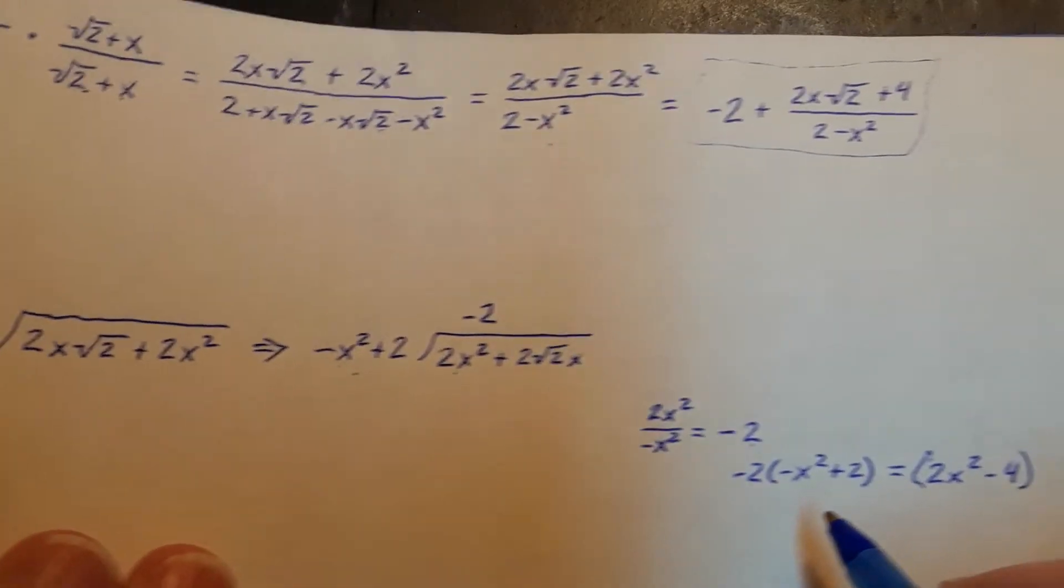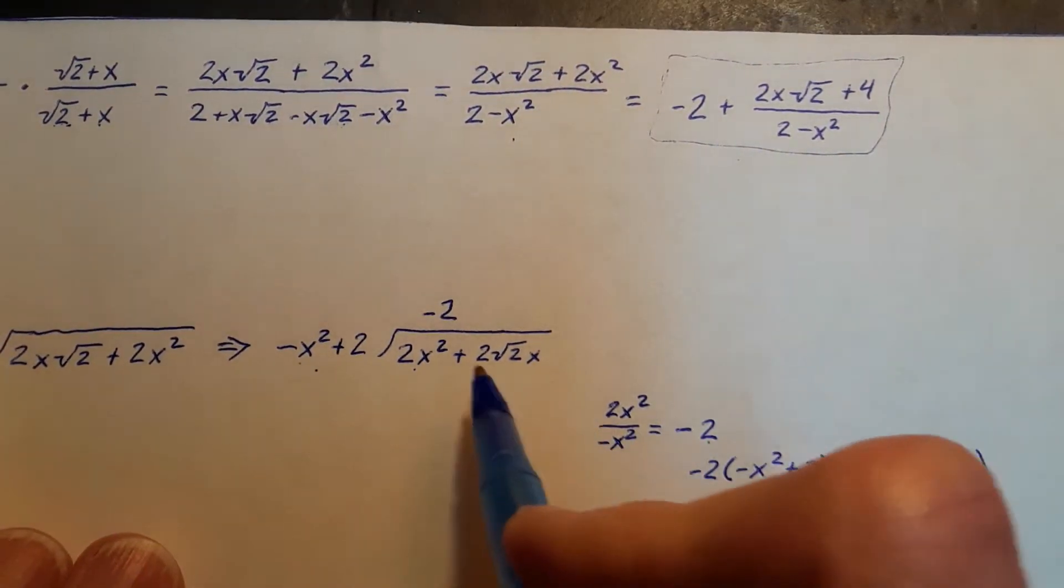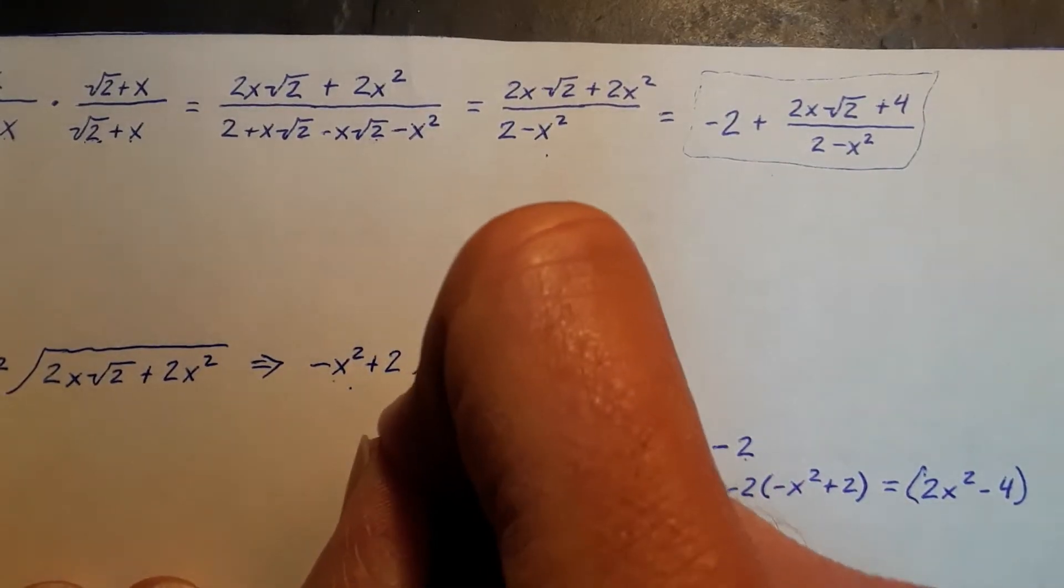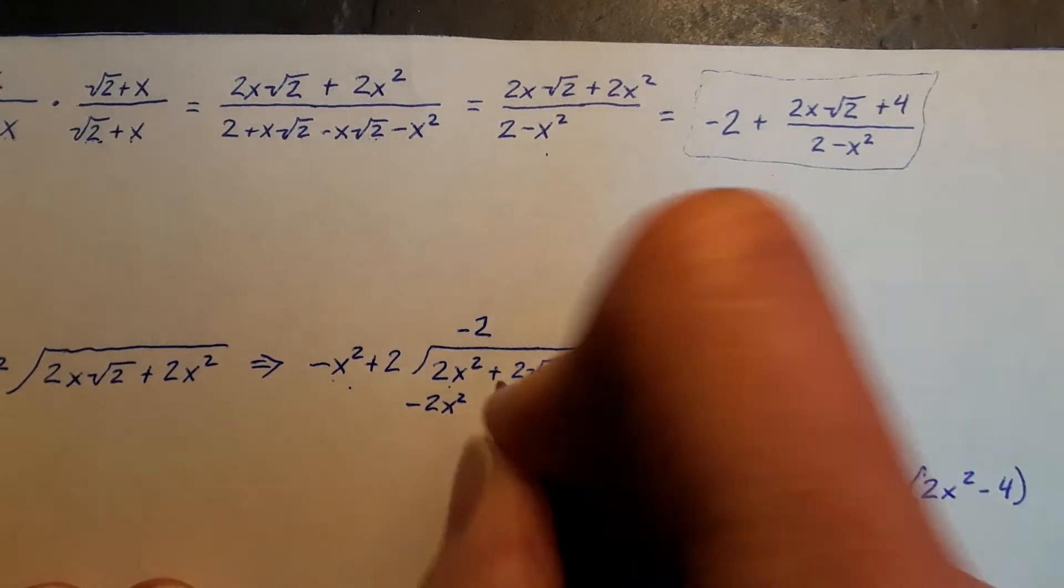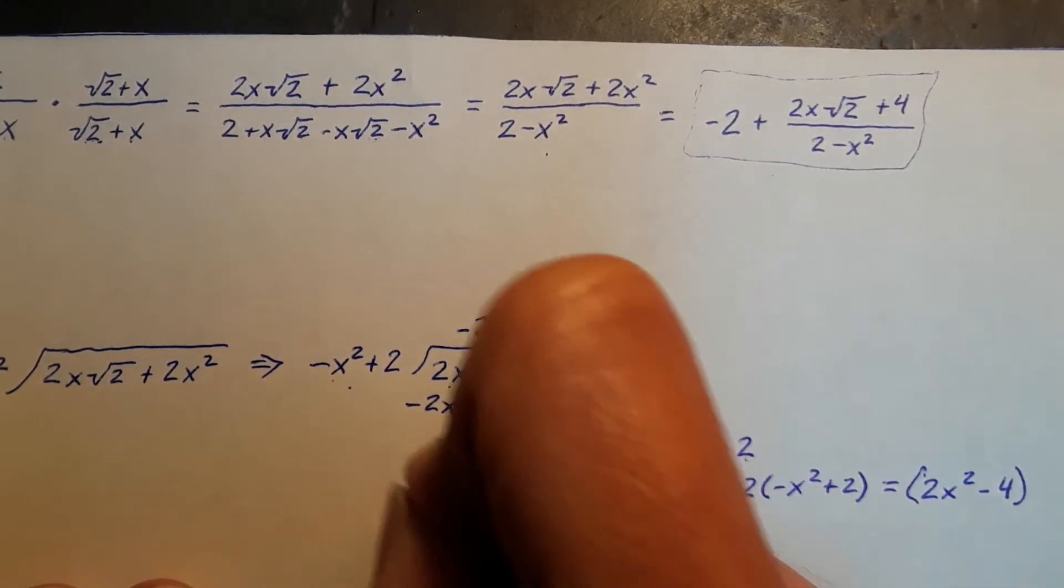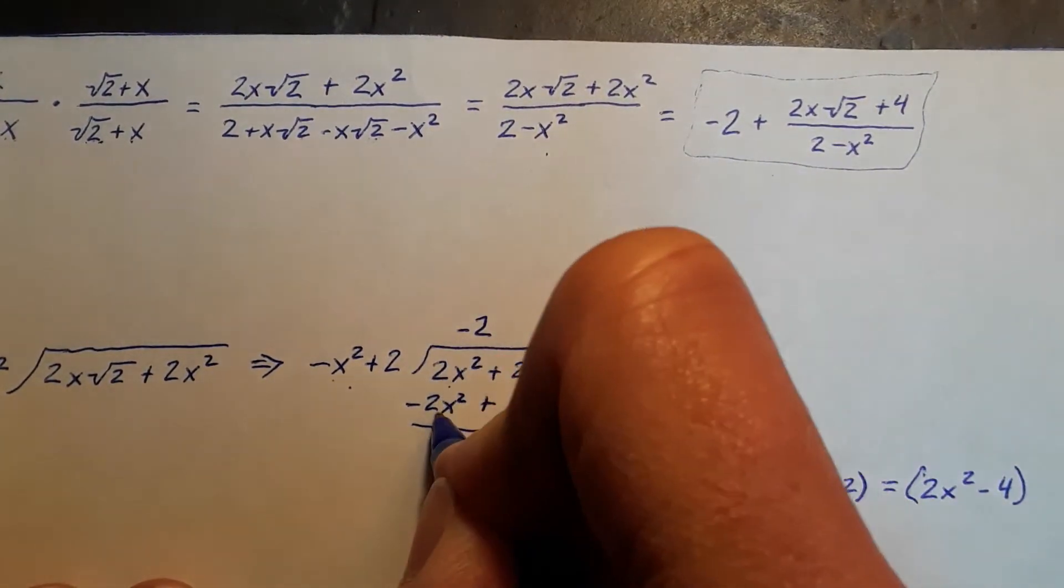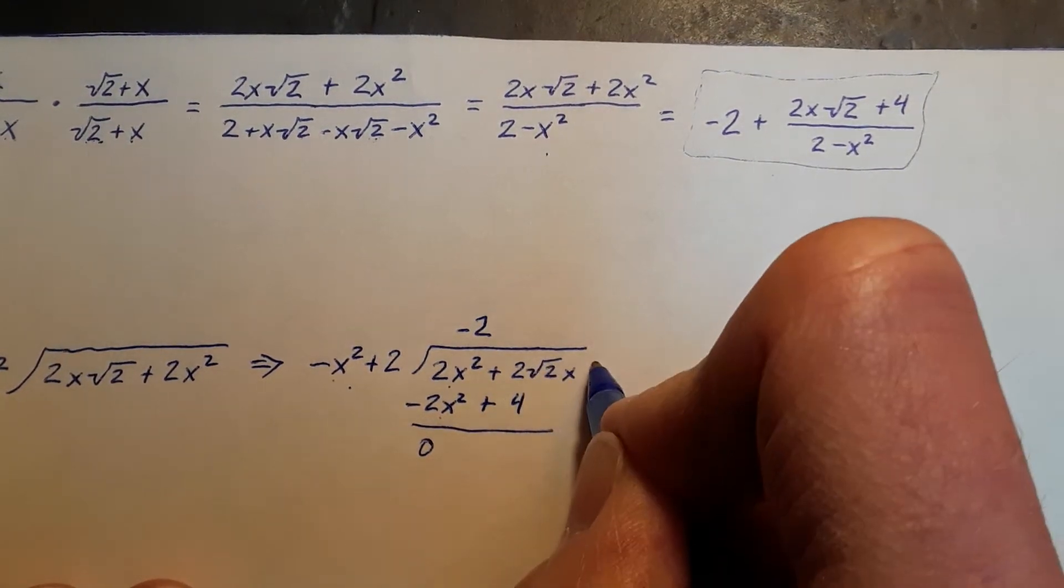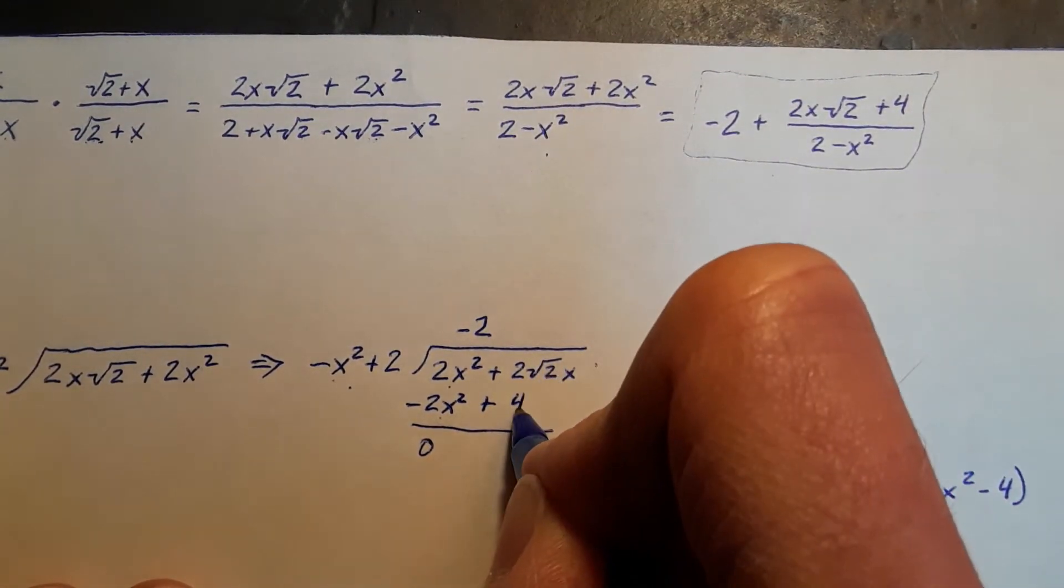And this gets tricky because as you subtract this term from this, you essentially have a negative 1 that is distributing over this. So this is negative 2x squared plus 4. As we add these together, this is 0. I don't have a constant here, so the constant is 0, so it's this plus 4.